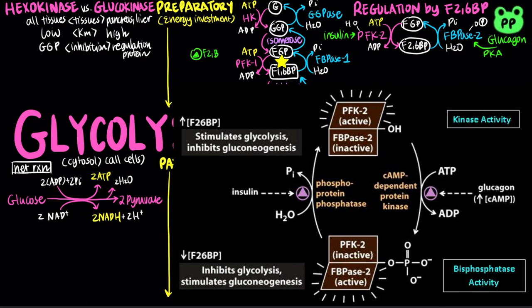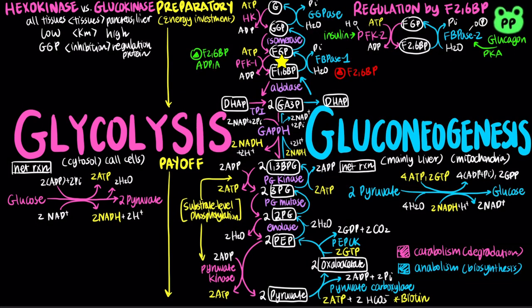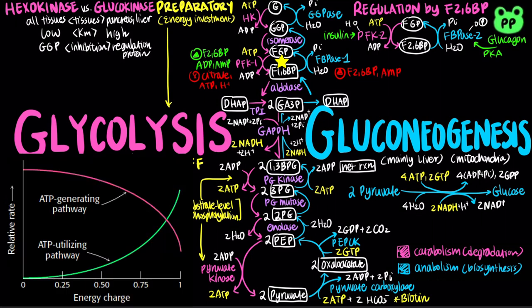Fructose-2,6-bisphosphate is an allosteric activator of PFK1 and an allosteric inhibitor of fructose-1,6-bisphosphatase-1. PFK1 is also activated by ADP and AMP, and inhibited by citrate, ATP, and protons. Fructose-1,6-bisphosphatase-1 is inhibited by fructose-2,6-bisphosphate and AMP. When AMP concentration rises, it signals that the cell has low energy charge; therefore, catabolic pathways such as glycolysis will be activated, and anabolic pathways such as gluconeogenesis will be inhibited.